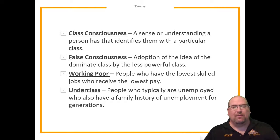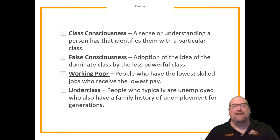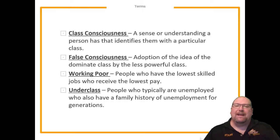Our next term is the working poor — people who have the lowest skilled jobs and receive the lowest pay. And finally, the underclass — people who are typically unemployed and also have a family history of unemployment for generations. These are the basic terms, but as we go through this lesson we're also going to be looking at some other key phrases that you'll need to be familiar with, and I'll try to point those out as we go.